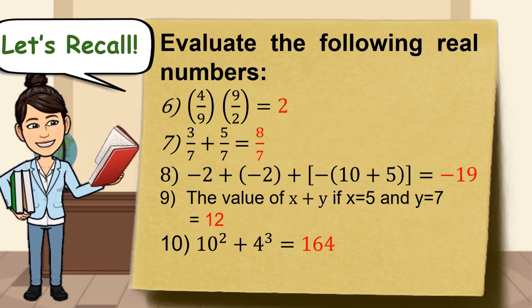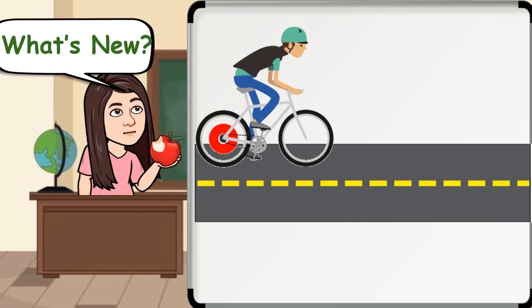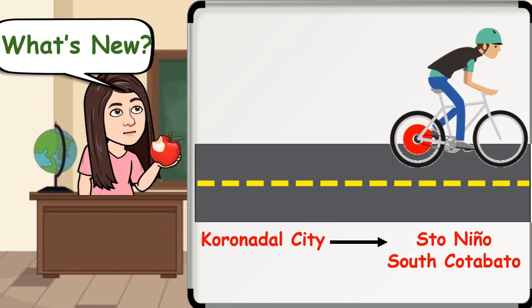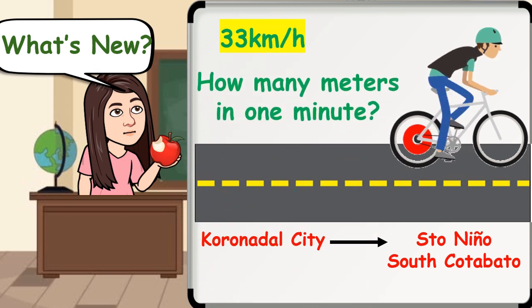You are now ready for our lesson today which is Solving Problems Involving Real Numbers. Let's start with this problem. A cyclist is traveling 33 kilometers per hour from Coronadal City to Santo Niño, South Cotabato. How many meters does the cyclist travel in one minute?